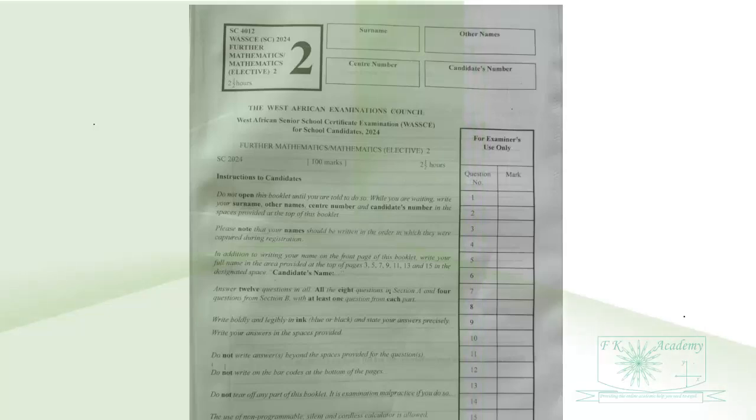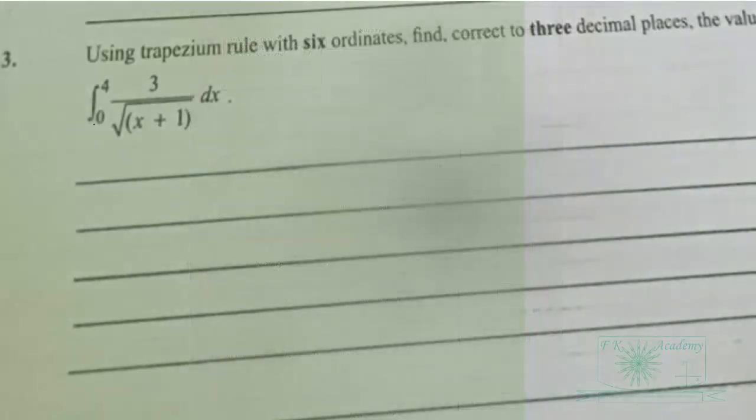Let us continue solving the WAEC 2024 Further Mathematics Paper 2 for school candidates. This time we are going to solve question 3, which is on numerical integration using the trapezium rule with six ordinates.